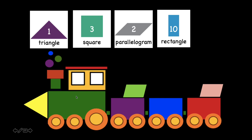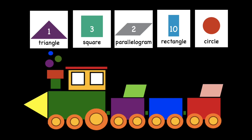Now, the last one would be circle. How many circles are there? Can you count for me? Alright, let's check the answer: twenty-one. Wow, let's count together. One, two, three, four, five, six, seven, eight, nine, ten, eleven, twelve, thirteen, fourteen, fifteen, sixteen, seventeen, eighteen, nineteen, twenty, and twenty-one. Very good. We have twenty-one circles here. Good job, everyone.